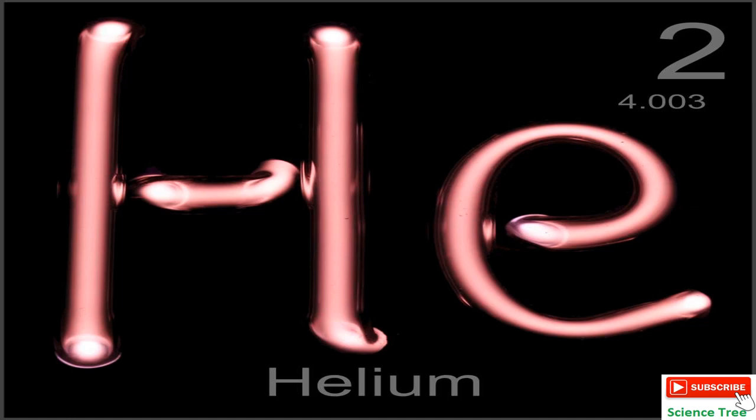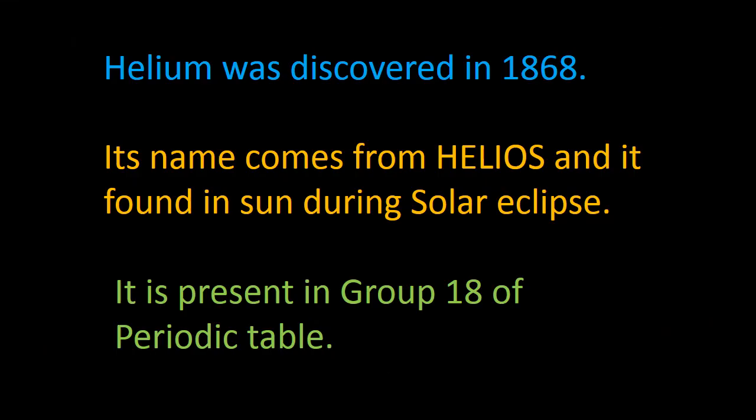Helium is the second lightest element in the periodic table. It was discovered in 1868, and the most interesting fact is that it was first discovered on the sun, not on earth. Its name comes from 'helios' and it was found on the sun during a solar eclipse.